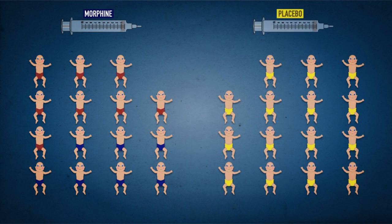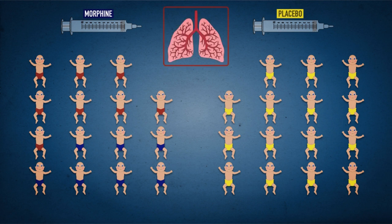And 8 of the babies given morphine also developed more long pauses in their breathing compared with only 3 babies in the placebo group.